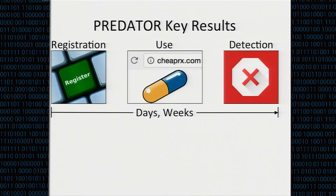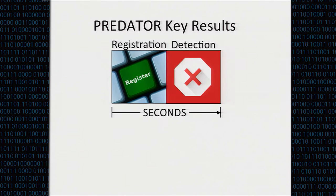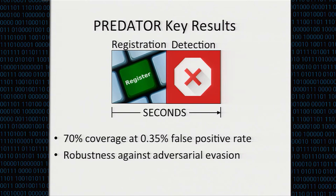To wrap up: we transformed the story from registration→use→detection — where detection takes days or weeks — to one where detection happens very quickly after registration. We achieve 70% coverage at a 0.35% false positive rate and offer some degree of robustness against adversarial evasion.